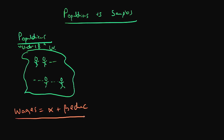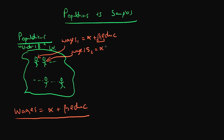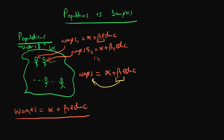What does this underlying population process mean? We hypothesise that for each individual in the population, there is a different effect of education on wages. For the first person, maybe Beta 1 represents the effect of education on wages — so maybe it's $25. For the second person, maybe it's $75, represented by Beta 2. When we look at the population and sum together all of these different individual processes, we get what we call a population process, where Beta represents the average effect which one year of education has on wages.